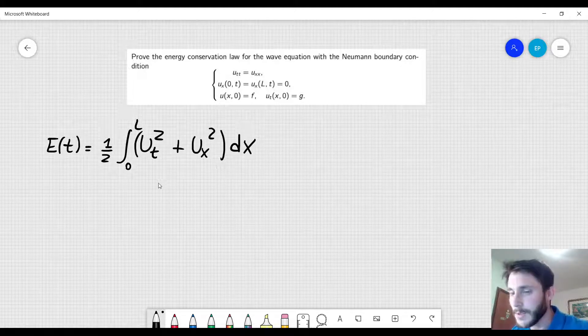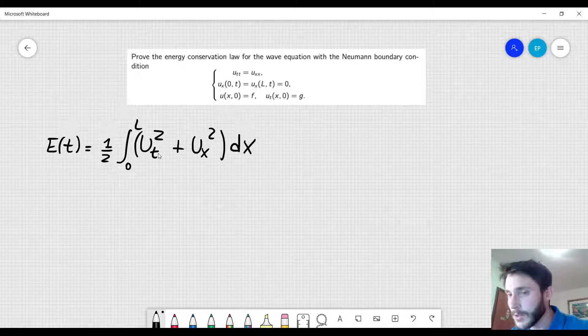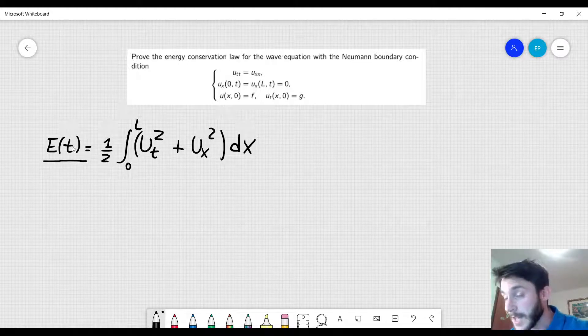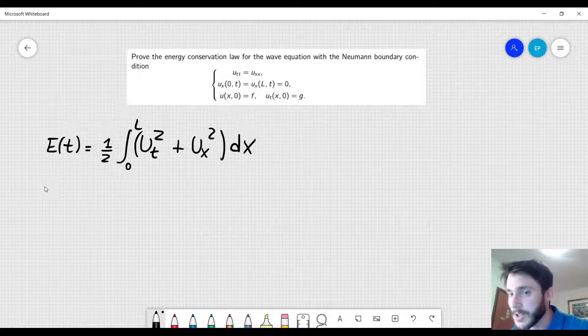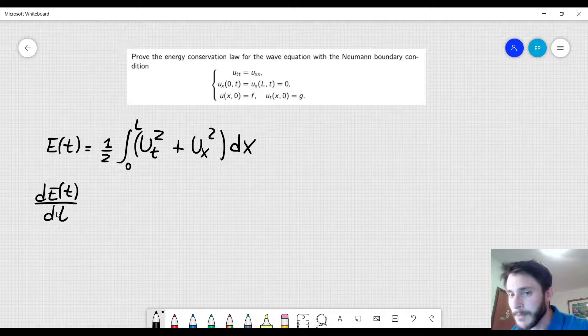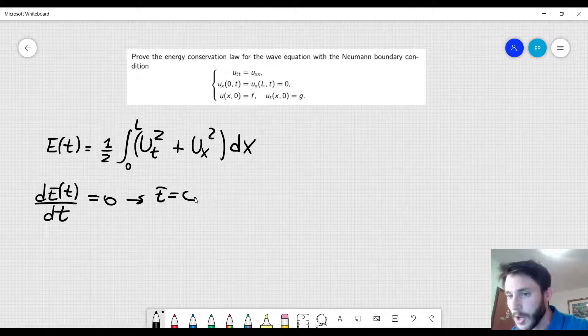So we have e to integrate over dx and in general since u_t and u_x are functions of x and t, when we integrate over the entire interval 0 to L, this function e(t) will be a function of time. So it will depend on t in general. But now we can show that the derivative of e with respect to time will be equal to 0. We will show this and therefore e will be a constant.